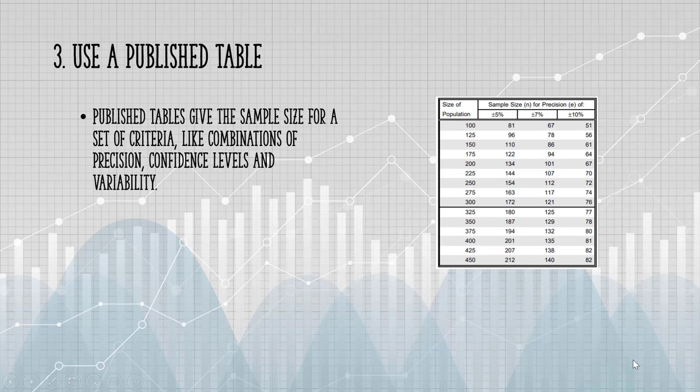Many tables have been published which give the sample size for a given set of criteria. For example, the table on the right, which is based on Yamane's formula, gives sample sizes for different precision levels. This assumes a confidence level of 95% and maximum variability, that is p equals 0.5.